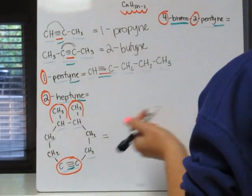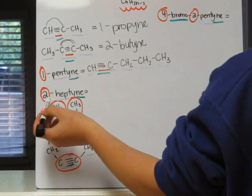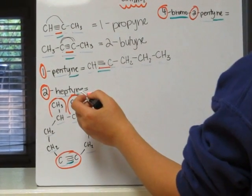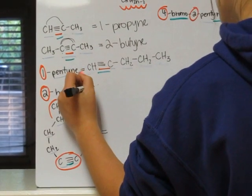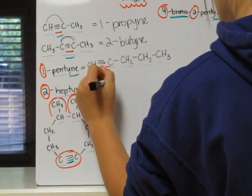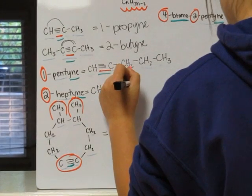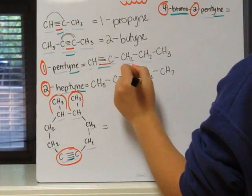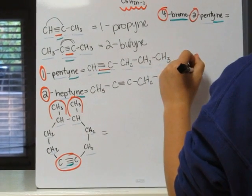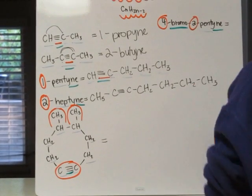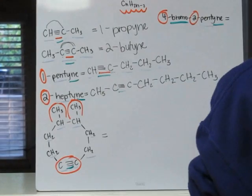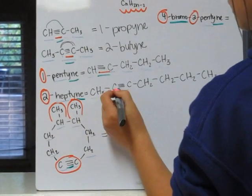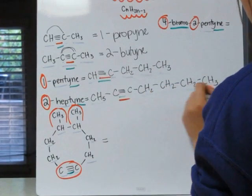Our next example, 2-heptyne: the two tells us that our triple bond is going to be going from the second carbon to the third carbon. And the hept tells us that we have seven carbons. We know that we have a triple bond because it ends in Y-N-E, or yne. So we have our green here for our yne, because of the triple bond. Our bond is on the second carbon to the third — the red for the number. And we have one, two, three, four, five, six, seven carbons for hept.